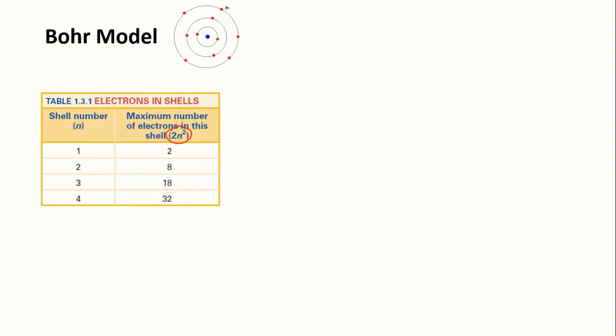So for n equals 1, the lowest energy level, the maximum number of electrons is 2 times 1 squared, which is 2. And for n equals 2, the second energy level, the maximum number is 2 times 2 times 2, which is 8, and so on.